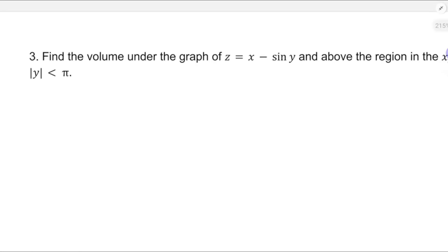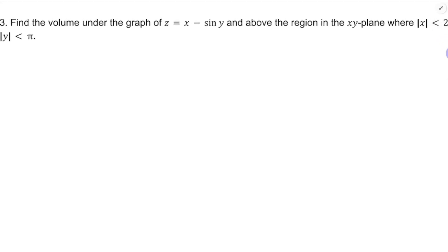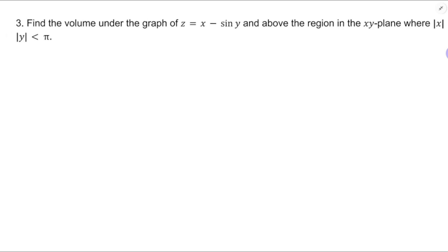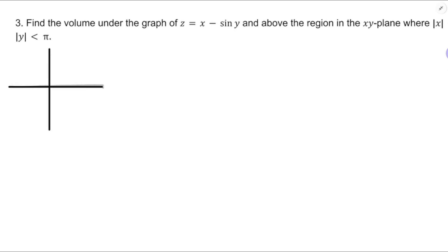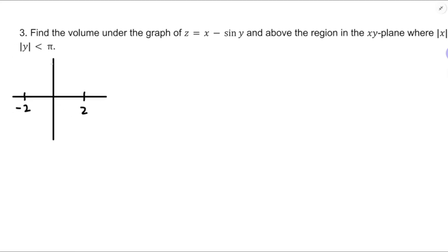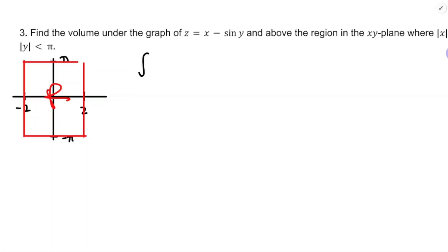Number three: find the volume of the solid under the graph of this function and above the region in the xy-plane where the absolute value of x is less than 2 and the absolute value of y is less than π. That makes it negative 2 to 2 for x, and for y it's going to need to be between negative π and π — a rectangular region of integration. Volume under the graph of a function is just the double integral, so the integral as x runs from negative 2 to 2, and maybe I'll do negative π to π on the outside, of x minus sine y.